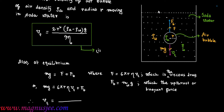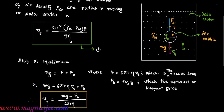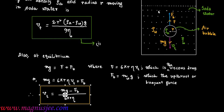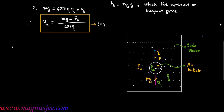Therefore, vt = (mg − fb) / 6πrη. This is another expression for terminal velocity, which is Equation 2.